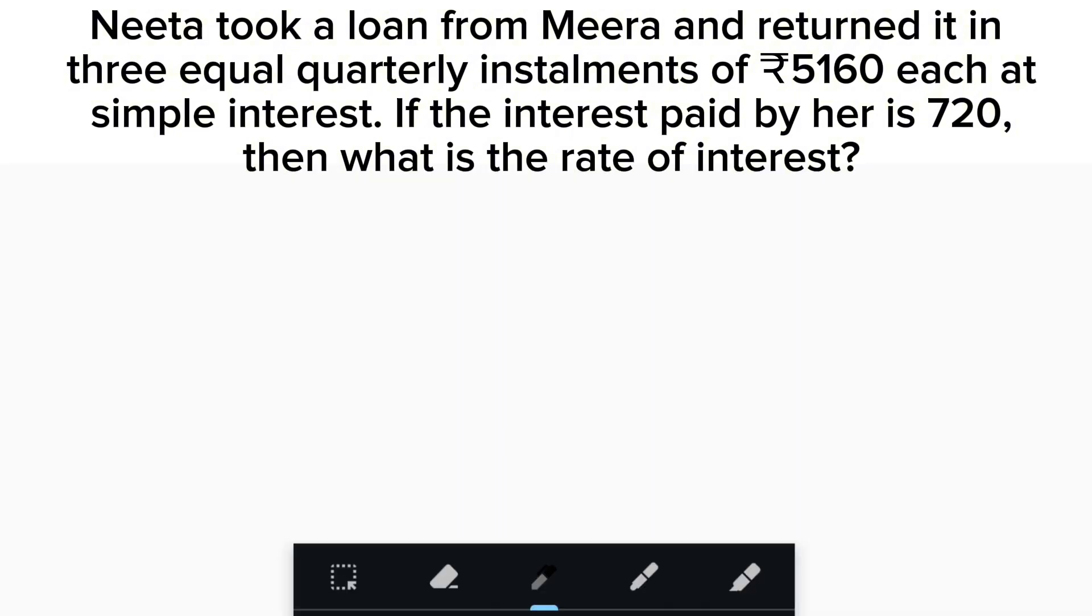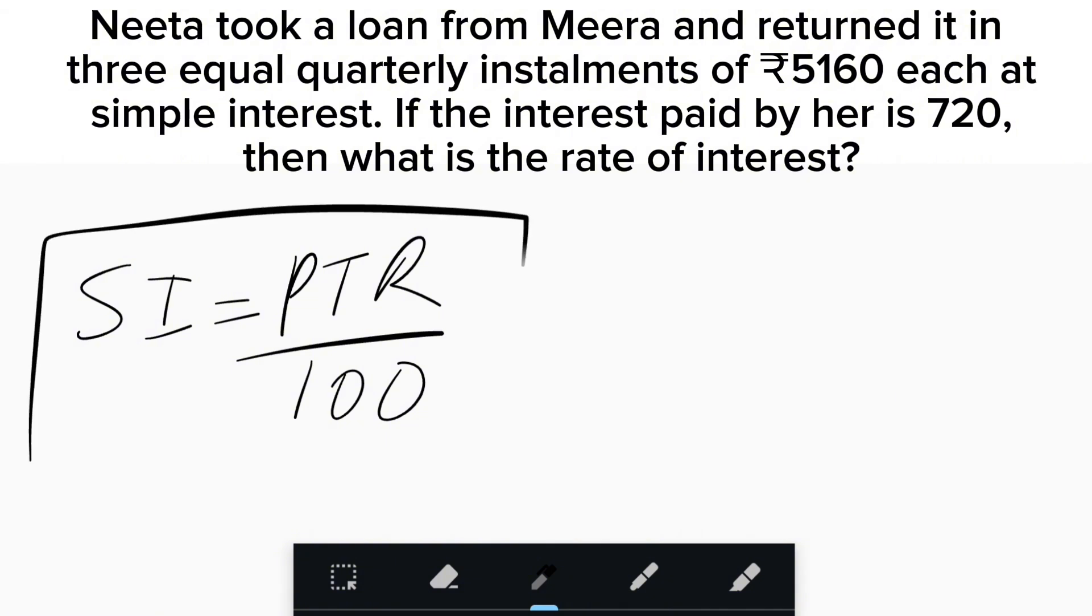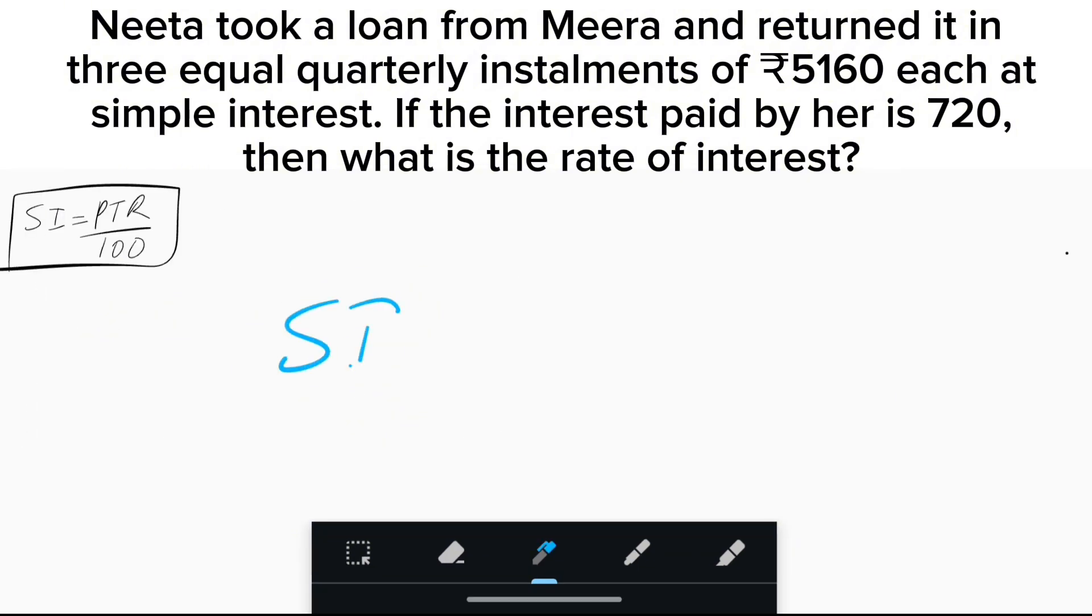This problem can be solved by the simple interest formula: SI = PTR/100. The simple interest given is ₹720.